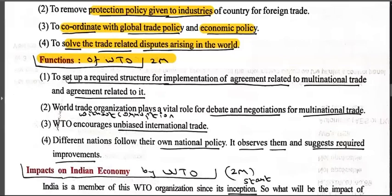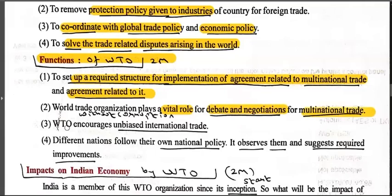Functions of WTO — two marks. First: to set up a required structure for implementation of agreements related to multinational trade — WTO prepares the full terms and conditions for how each country should trade. Second: WTO plays a vital role in debate and negotiation for multinational trade — discussing issues and resolving matters through conversation. Third: WTO encourages unbiased international trade — without any corruption, it encourages simple international trade.